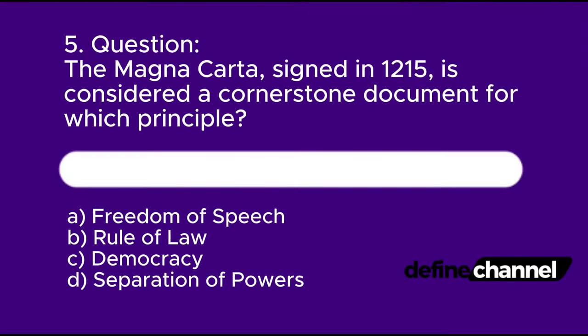Question 5: The Magna Carta, signed in 1215, is considered a cornerstone document for which principle? A. Freedom of speech, B. Rule of law, C. Democracy, D. Separation of powers. Please determine which is the correct answer.